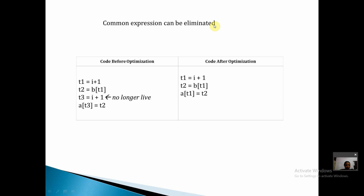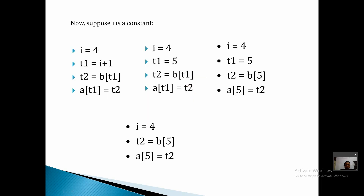Here is another example: i plus one appears twice with no change in between. It is first assigned to T1, and the second occurrence would be assigned to T3. Since the result is already available in T1, we eliminate the third instruction and replace T3 with T1 throughout. The optimized code keeps the first two instructions and writes A of T1 equal to T2.